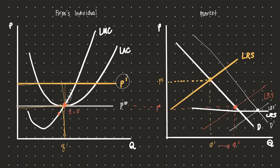We assumed at the start of the video that we are operating in a constant cost industry. That essentially means that the entry of new firms does not raise input prices, nor cause external costs to existing firms and new entrants. The cost curves of each firm — existing and new — will not shift as new firms enter. New firms don't really affect the input markets, so we retain the existing cost curves. We'll continue with the mathematical assumptions and other cases such as decreasing cost and increasing cost industries in the next video.